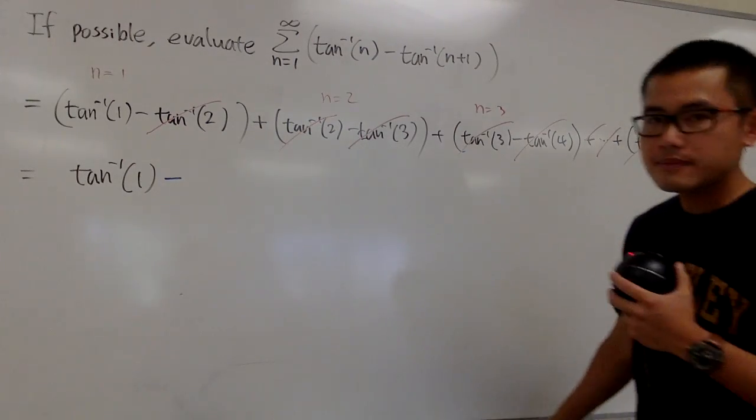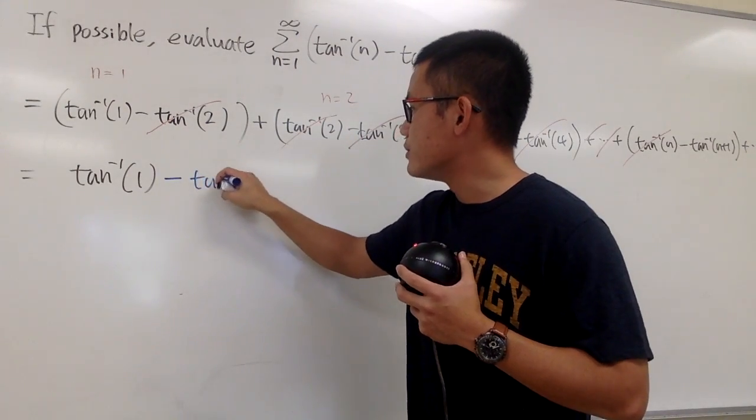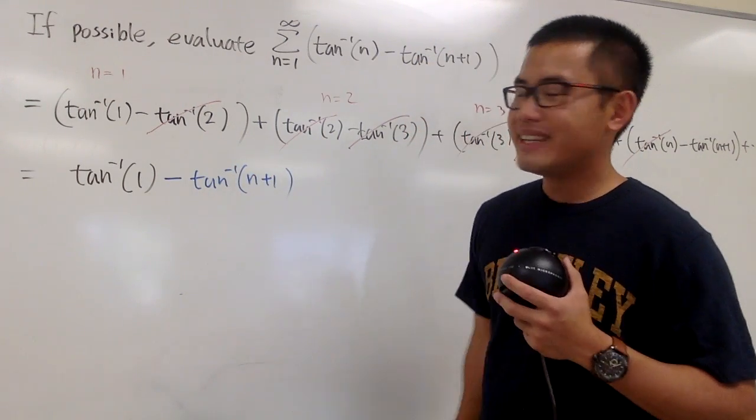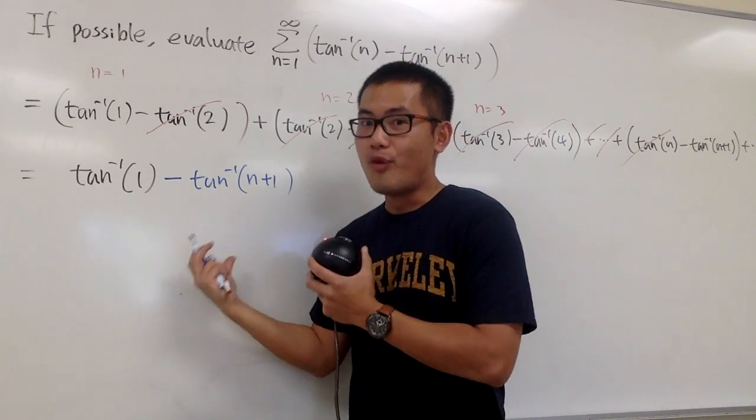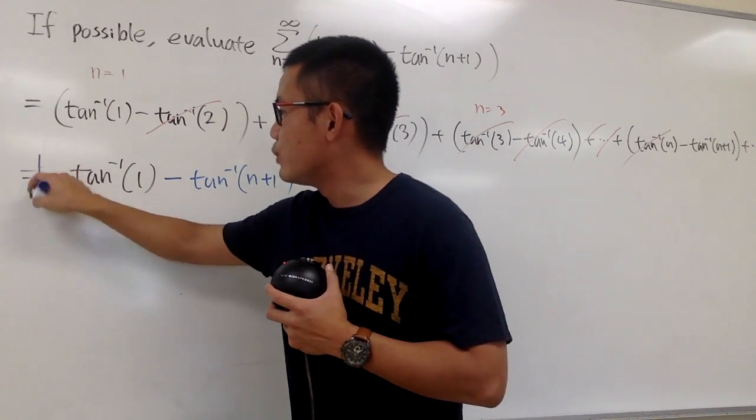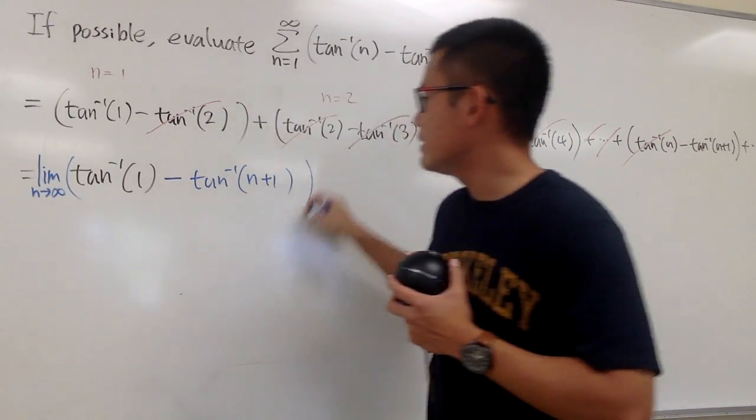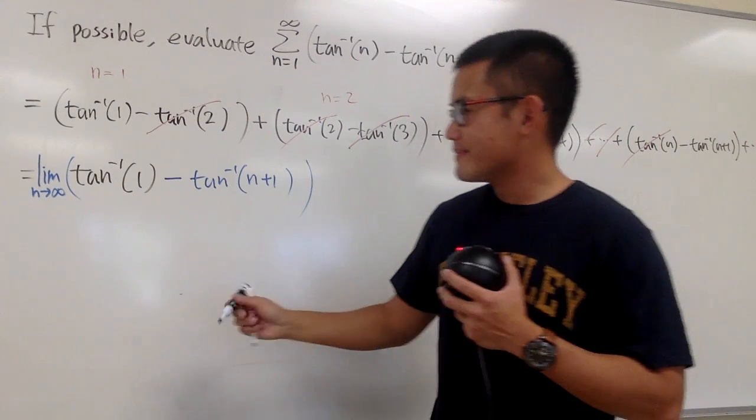Minus, that's a minus. And we have the inverse tangent of n plus 1, like this. This is the formula part. And we have to see what will happen as n goes to infinity. So we take the limit of this.